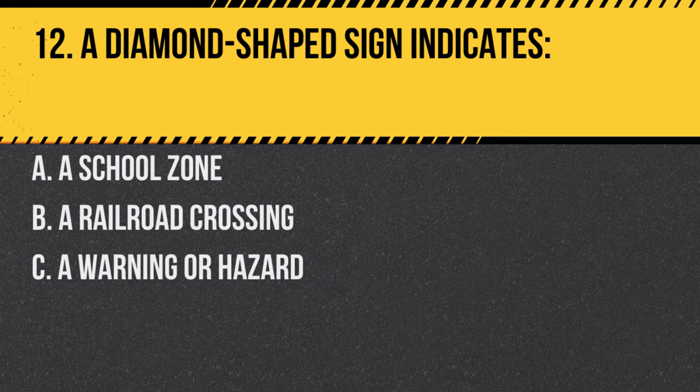Question 12. A diamond-shaped sign indicates: a. A school zone. b. A railroad crossing. c. A warning or hazard. Answer: c. A warning or hazard. Diamond-shaped signs are used for warnings.